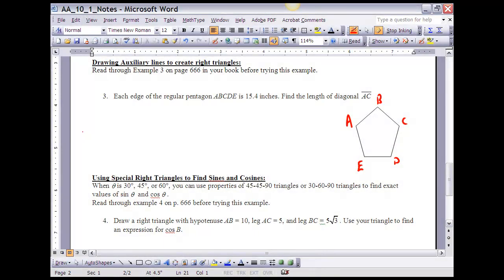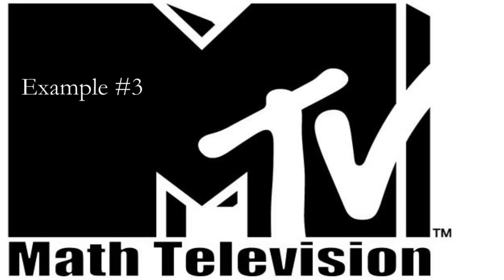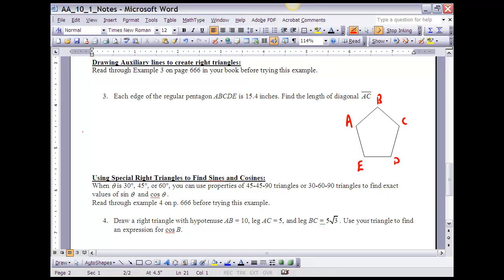If you want at this point, you could stop the video and read through example 3 on page 666 in your book. Number 3 here says each edge of the regular pentagon, ABCDE, is 15.4 inches. Find the length of the diagonal AC. Sometimes we have situations where we may not have a right triangle, but we can create a right triangle to help us solve for a particular situation, and this would be one of those. So if I'm trying to find the diagonal AC, I'm trying to find this distance right here. I know this distance here is 15.4, this is 15.4, and I'm trying to find this distance right here, AC.